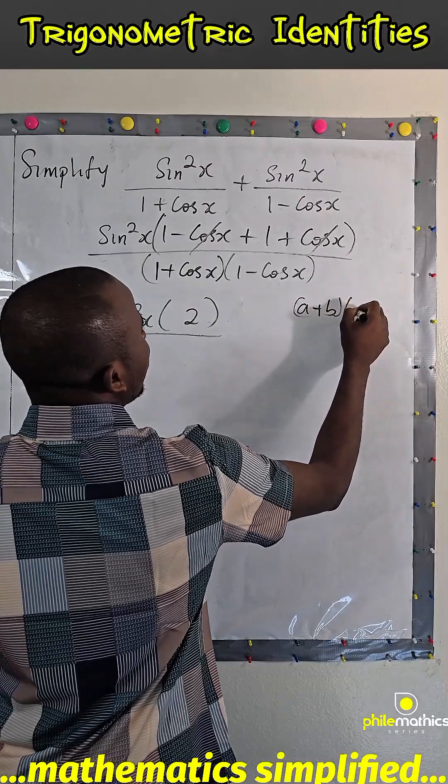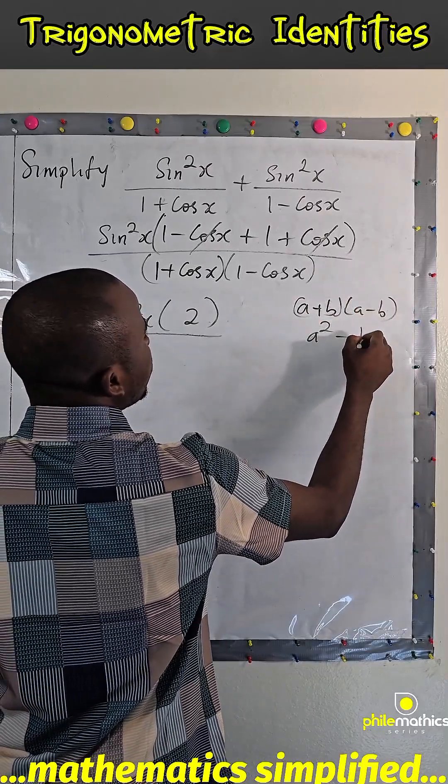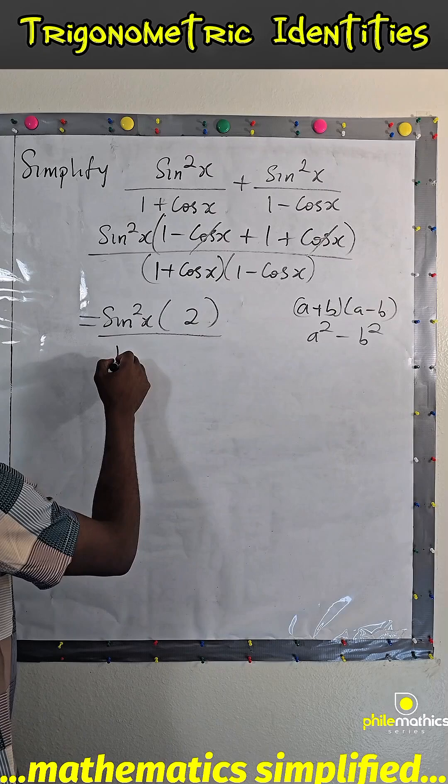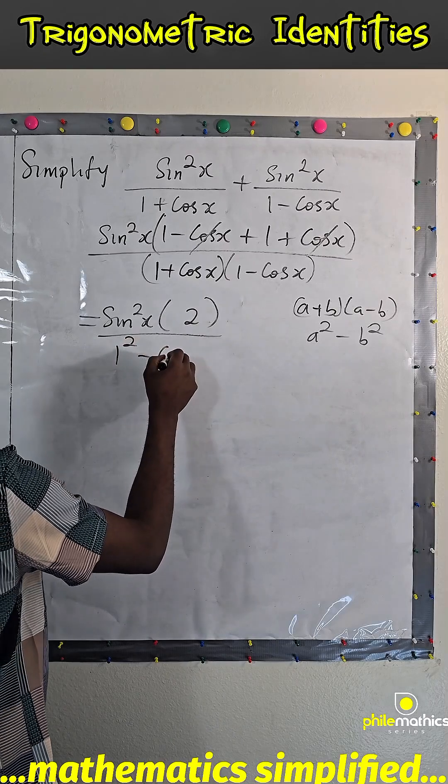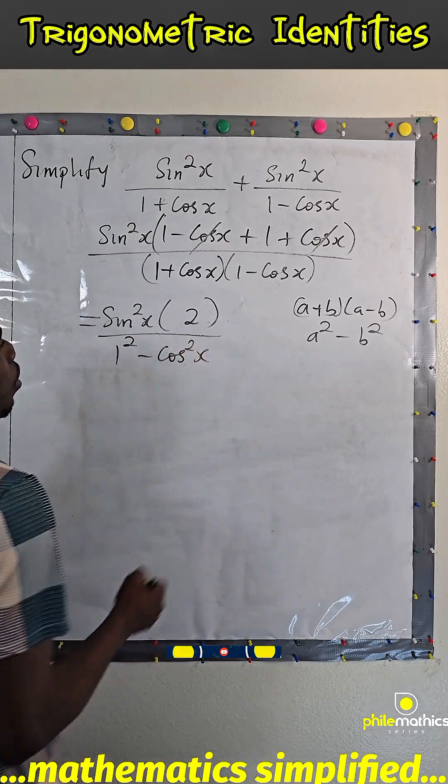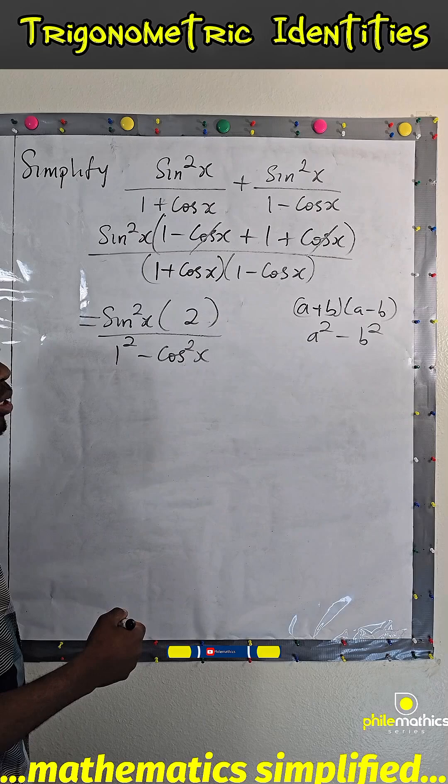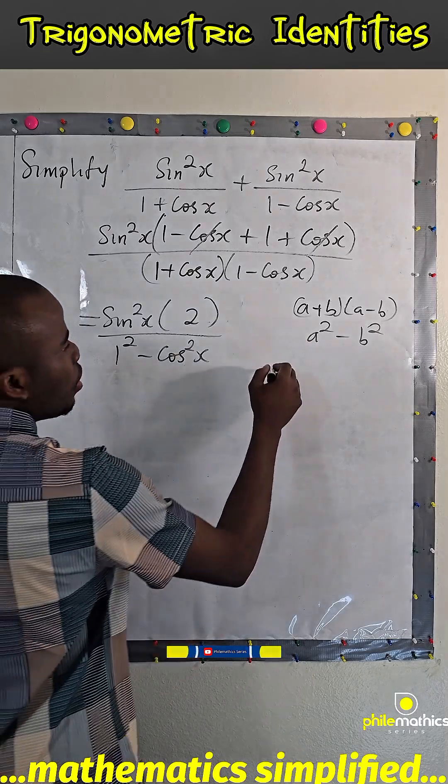So this would be 1 square minus cos square x. But remember, from one of the three identities, 1 equals sine square x plus cos square x.